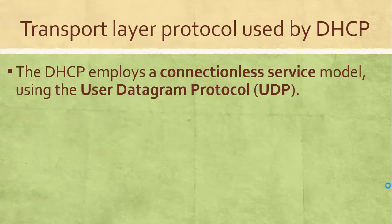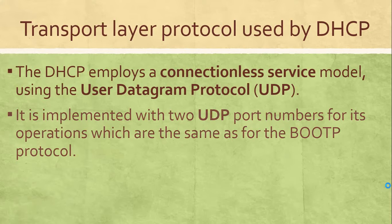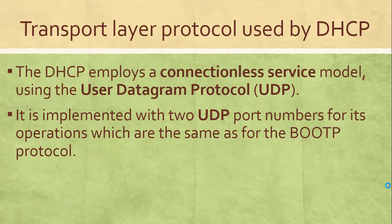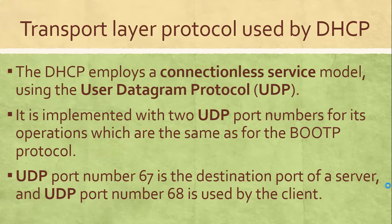The transport layer protocol used by DHCP — DHCP employs a connectionless service model using the User Datagram Protocol, that's UDP. It is implemented with two UDP port numbers for its operations, which are the same as for the BOOTP protocol.